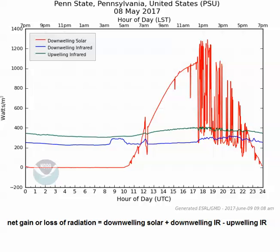So to figure out if you have a net gain or loss of radiation, you take the difference between your incoming radiation and outgoing radiation. For the Earth's surface, we use this equation. We have downwelling solar and downwelling infrared as our sources of incoming absorbed radiation, and upwelling infrared radiation as outgoing emitted radiation. A positive result means a net gain in radiation and the Earth's surface warms up. A negative result means a net loss in radiation and the Earth's surface cools.